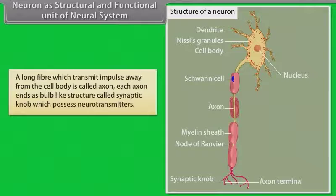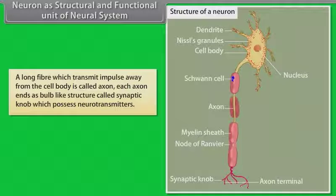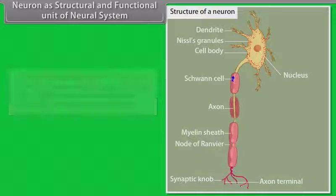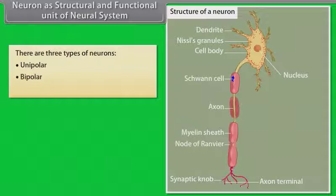A long fiber which transmits impulse away from the cell body is called axon. Each axon ends as a bulb-like structure called synaptic knob which possesses neurotransmitters. There are three types of neurons: unipolar, bipolar and multipolar.